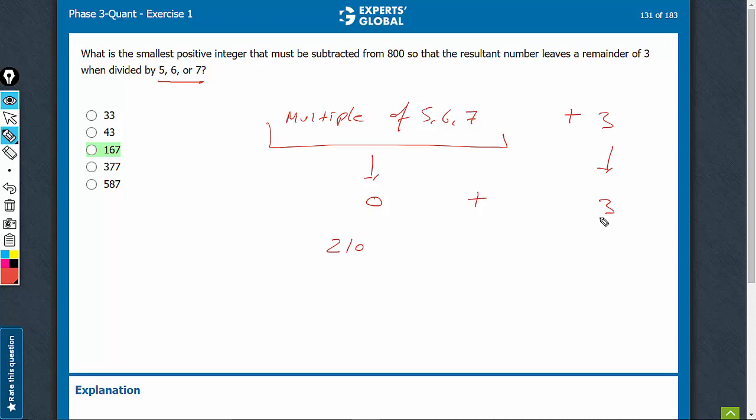210 plus 3 would be 213, which is far away from 800. We need a number that is around 800, and therefore, let's look at higher multiples.